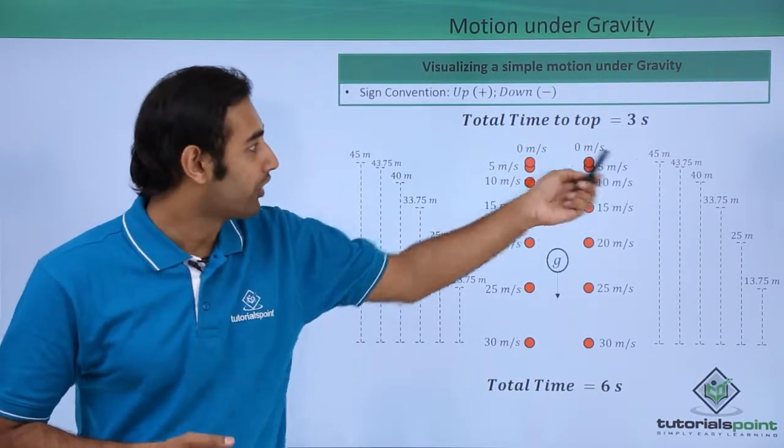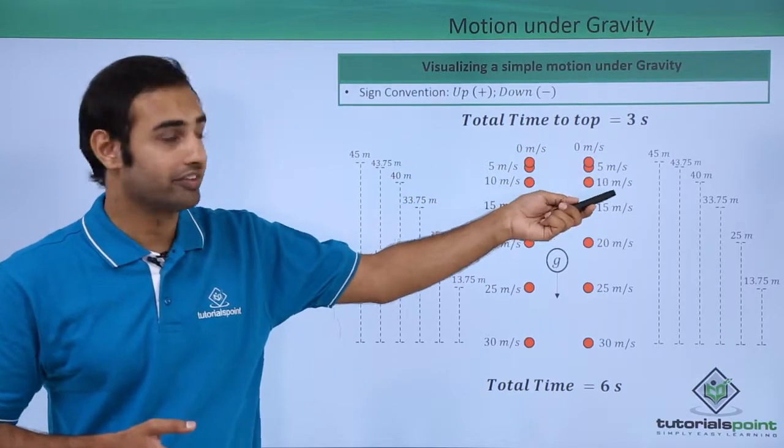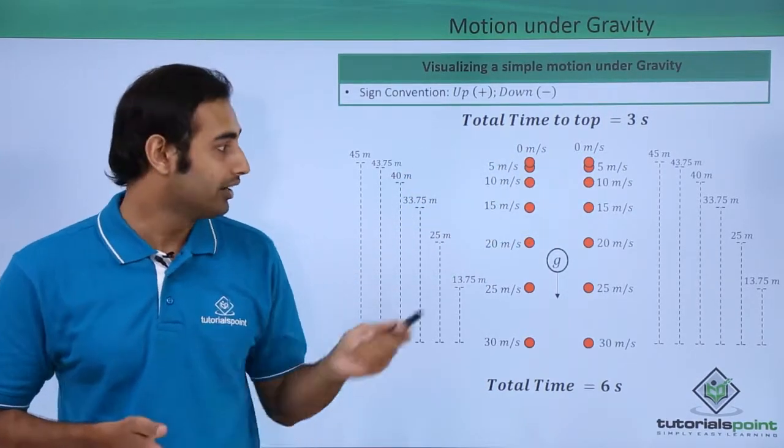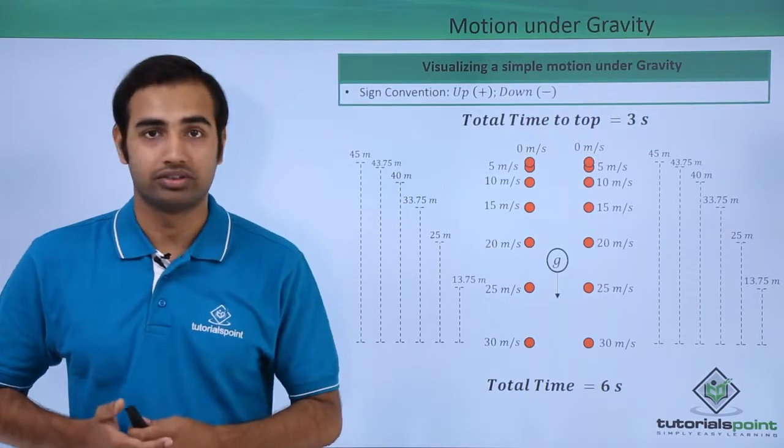The same thing is clear while coming down as well. The value of height every 0.5 seconds is exactly the same as you can see from the figure, and the variation is quadratic in both the situations.